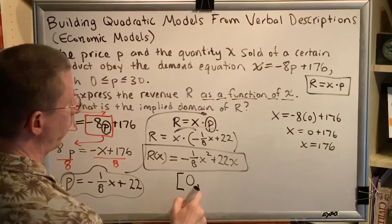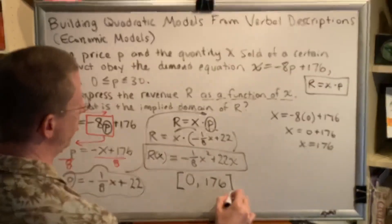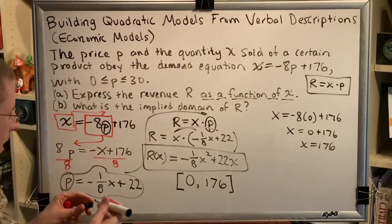So that allows us to fill in the remaining part of our domain, which for this problem is [0, 176].